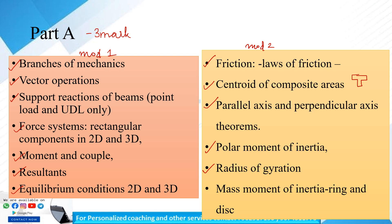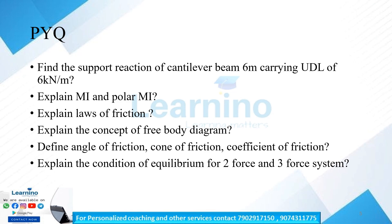Now let's look at previous exam questions. Find the support reaction of a cantilever beam, 6 meters, carrying a UDL of 6 kN per meter. We use the equilibrium equations: sigma Fy equals 0, and sigma moment equals 0.